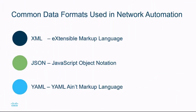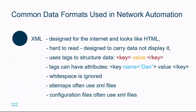The common data formats used in network automation are XML, JSON, and YAML. XML was designed for the internet and looks a lot like HTML. It's generally hard to read, as it was designed to carry data and not display it. It uses tags to structure the data, where the value is between the key tags. The tags can have attributes. Whitespace is ignored. Sitemaps and configuration files also often use XML files.